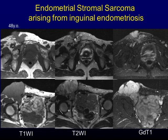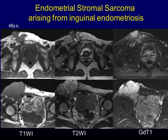This is a case of malignancy arising from inguinal endometriosis. Although rare, endometrial stromal sarcoma is also derived from endometriosis. This patient was diagnosed with right inguinal endometriosis four years before this image was obtained. After that, a right inguinal protrusion was noticed and proved to be endometrial stromal sarcoma from endometriosis by several biopsies. Vascular invasion to the right inguinal vessels is characteristic of endometrial stromal sarcoma.